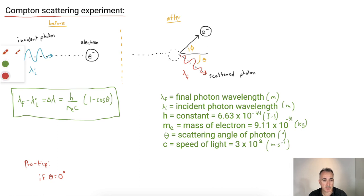Here's a nice little pro tip. What if your angle is actually 0? What happens then? The cosine of 0 degrees, that just equals 1. And 1 minus 1 gives you 0, so that means delta lambda equals 0. In other words, there's no change. It should make sense. If it doesn't go off at an angle, then there's no change in the wavelength.